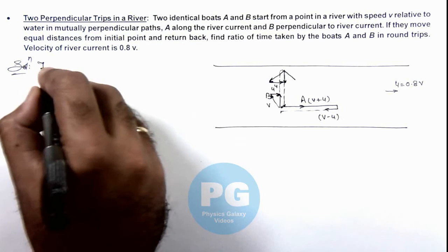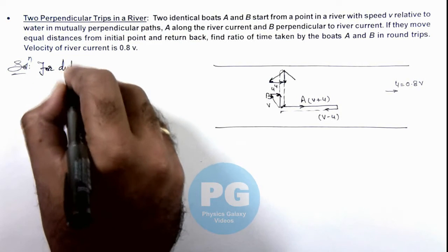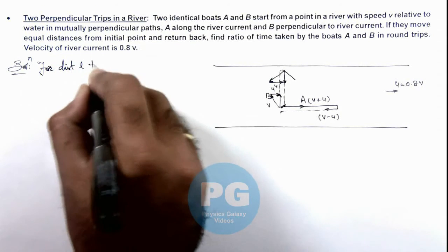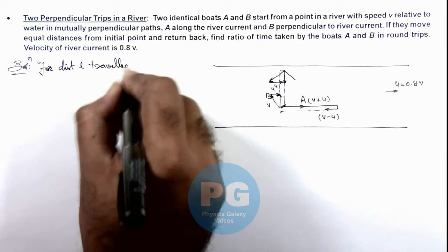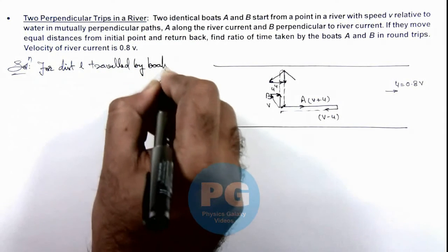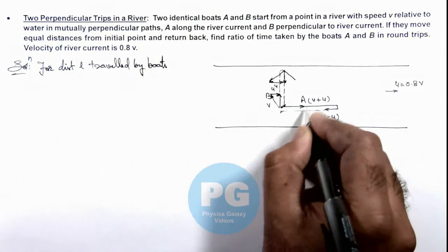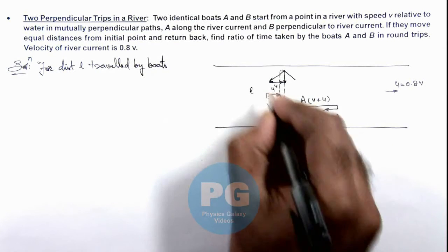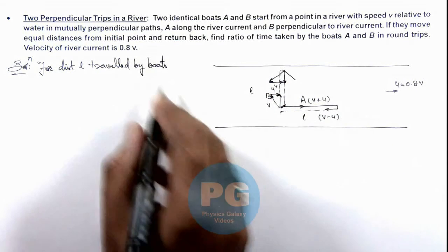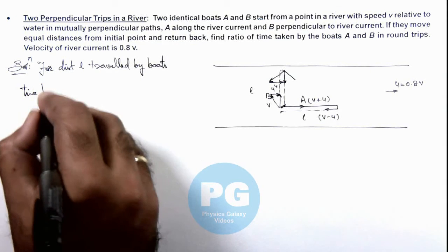So here we can write for distance l traveled by boats, as we assume A will travel a distance l and B will also go and come back for a distance l, we can write time taken.